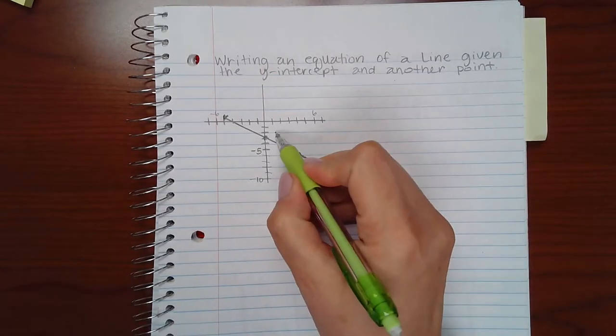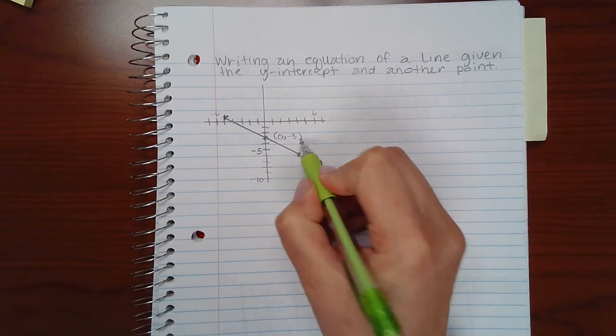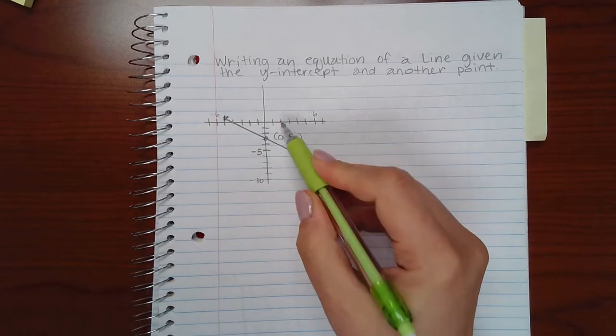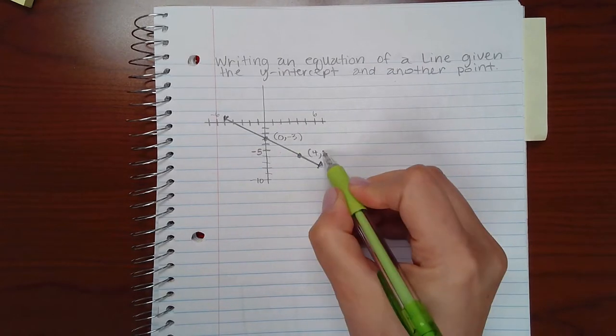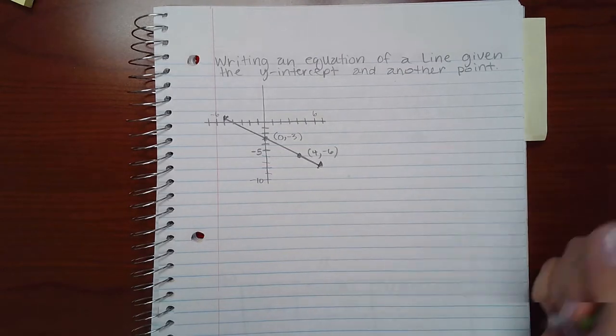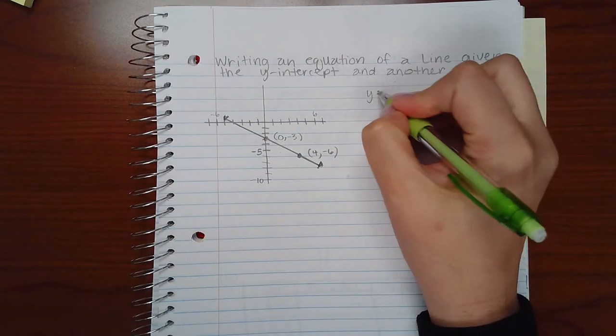So the coordinates of this point are 0 for x and negative 3 for y. The coordinates for this point are 4 for x and negative 6 for y. So in order for me to write the equation, I want to use this formula.